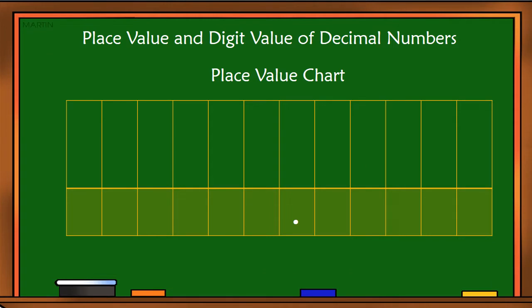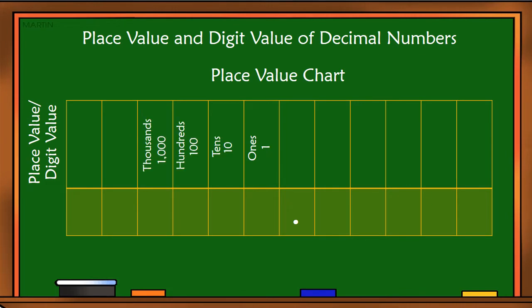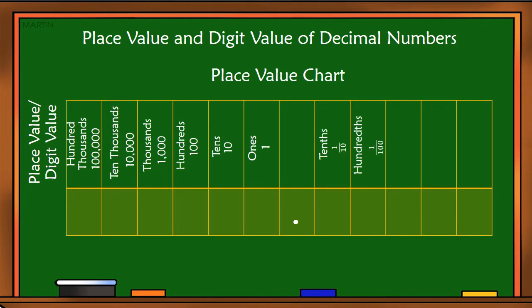Let's look at the place value chart. We have ones, tens, hundreds, thousands, ten thousands, and hundred thousands. And on the decimal number side, we will start with tenths, hundredths, thousandths, ten thousandths, and hundred thousandths. You can get your math notebook and copy the place value chart for your reference.